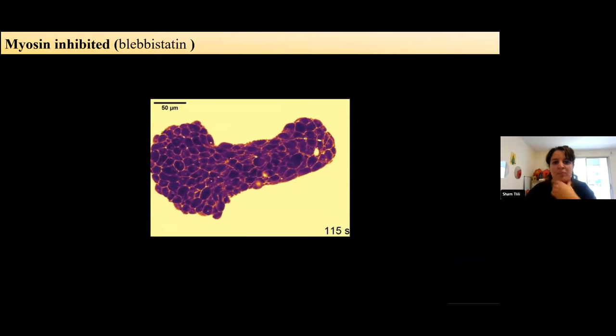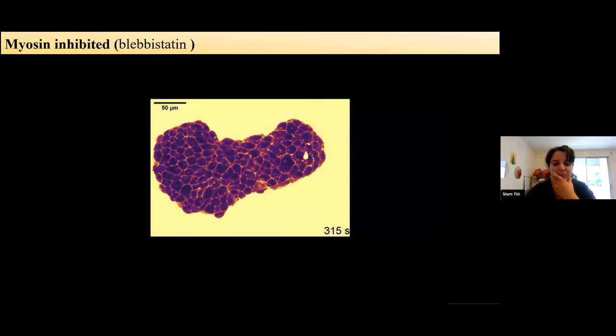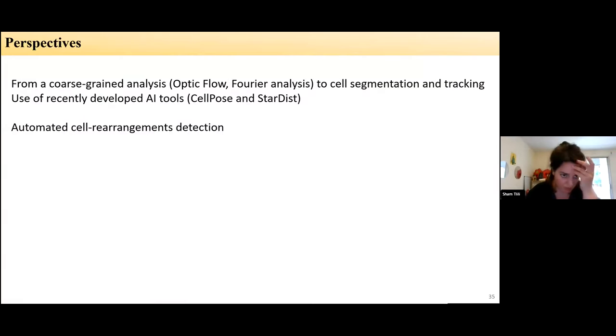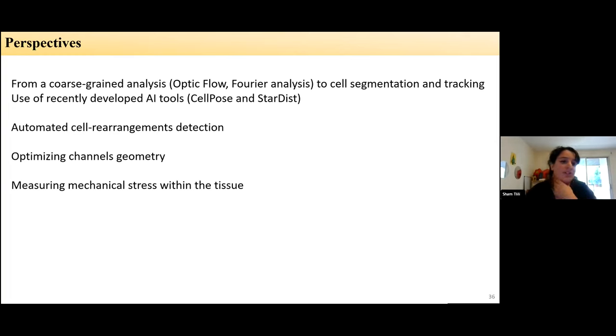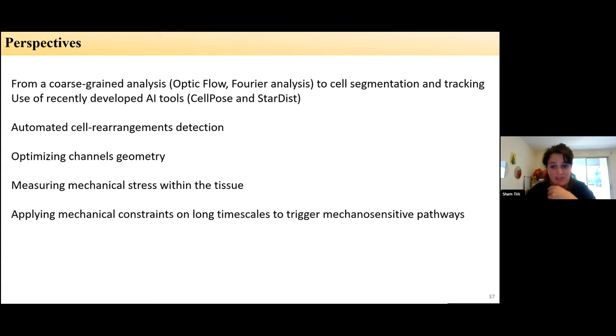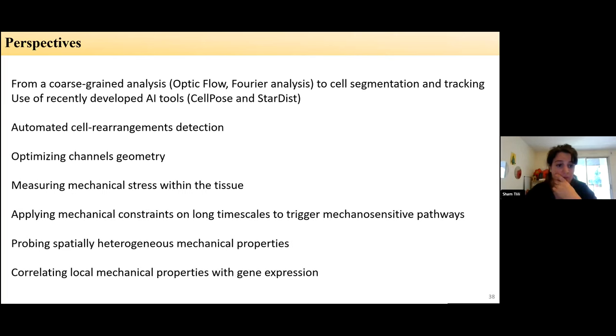So of course, you can also apply drugs like myosin and see that you affect such behaviors that are myosin-dependent. So to conclude on the perspectives on this work, something we could improve is, of course, now we use the coarse grain analysis that do not require tracking or segmentation. But now with the new deep learning tools like CellPose or Stardist, now we are working on making the full tracking and cell rearrangement detection. Of course, there is a need of optimizing the channel's geometry depending on the size of the gastruloid and also a need to develop tools to measure mechanical stresses within the tissue. Another thing that would be interesting that Helen has started doing is to apply mechanical constraints on long timescales to trigger mechanosensitive pathways. And the last thing that I'm currently starting is probing especially heterogeneous mechanical properties and correlating them with the local gene expression.